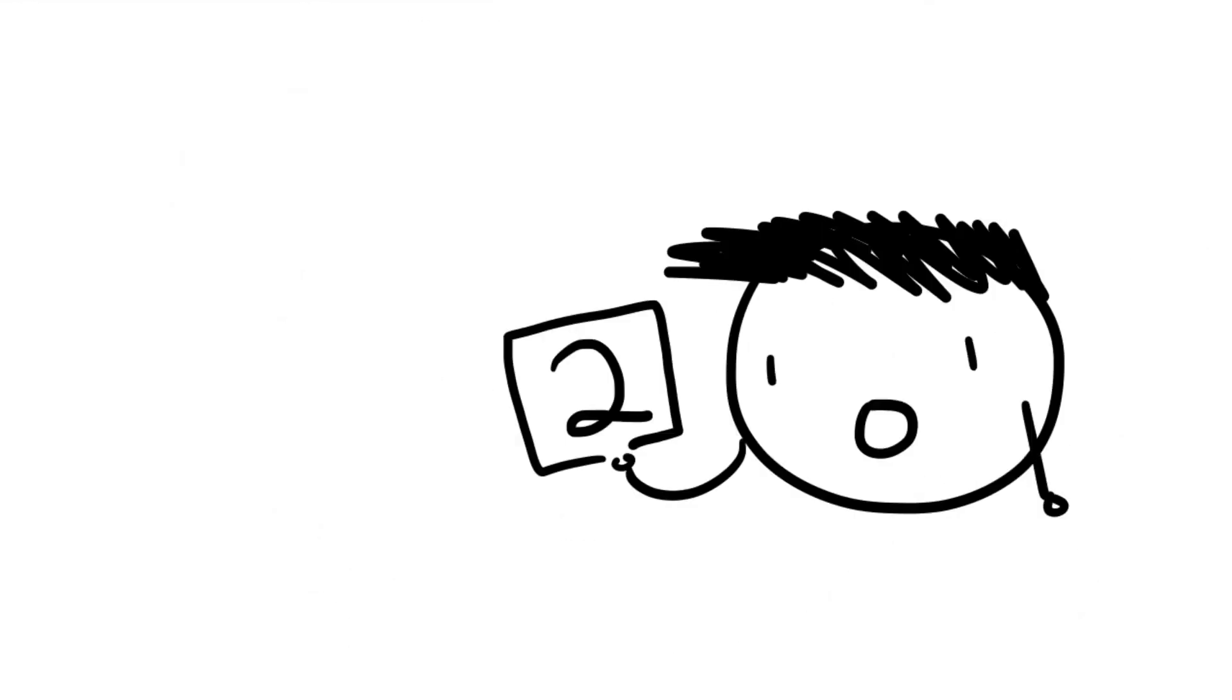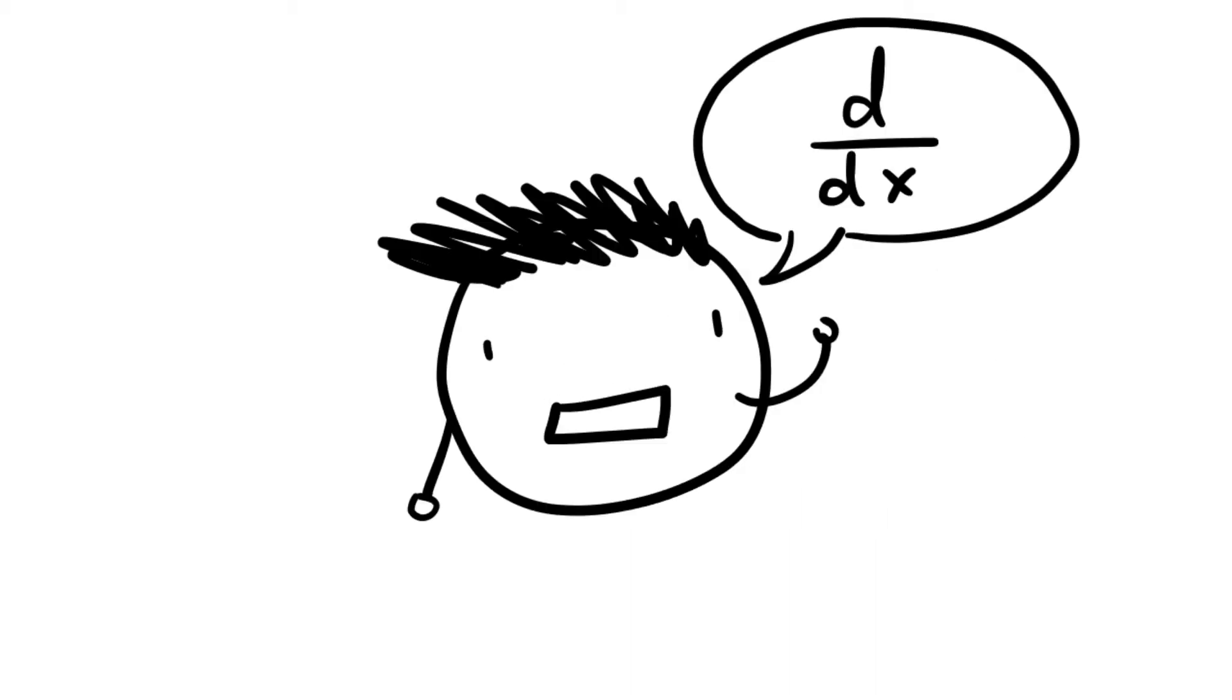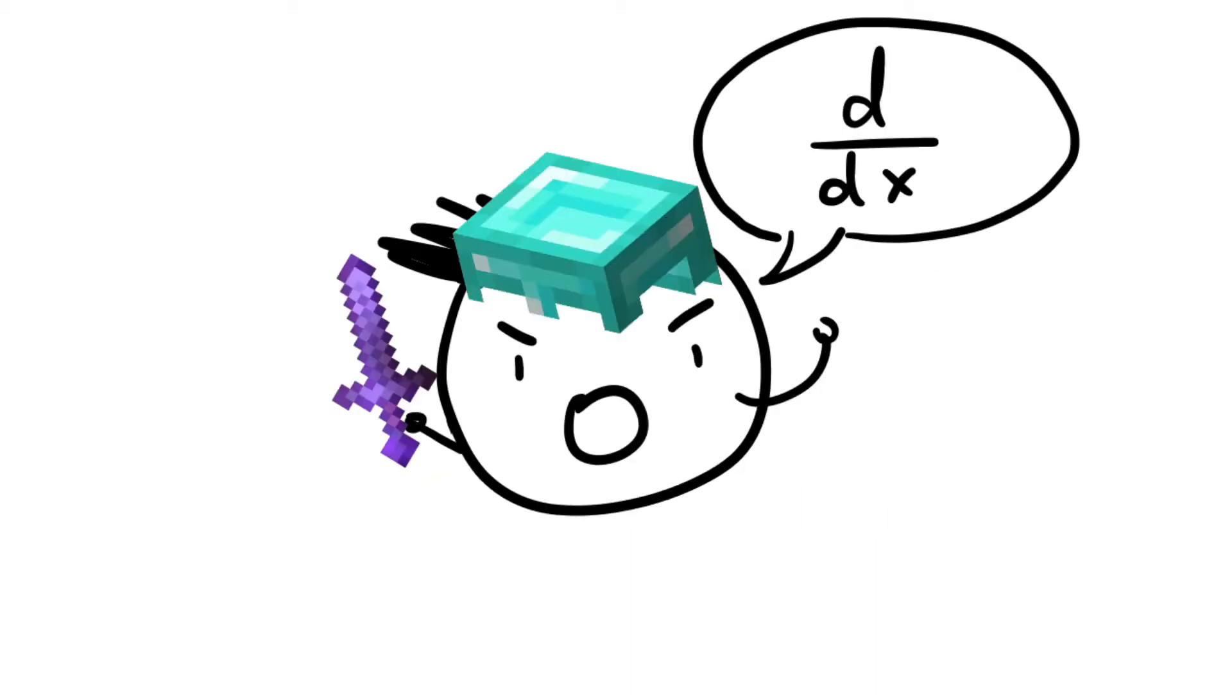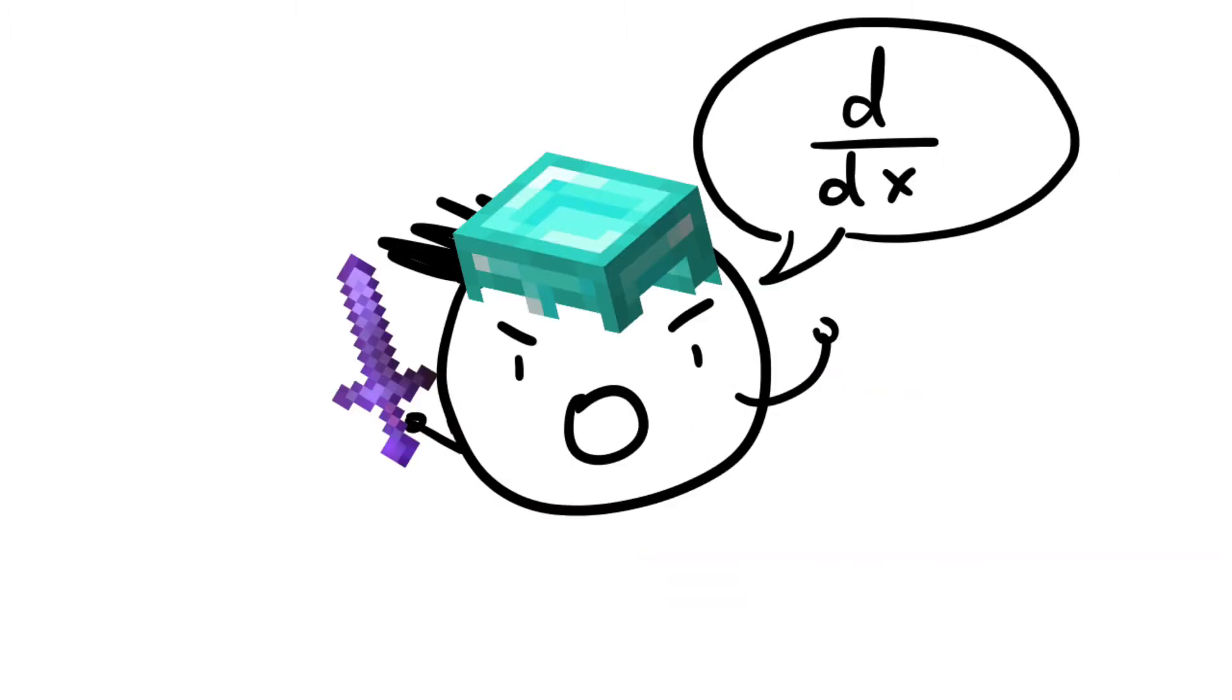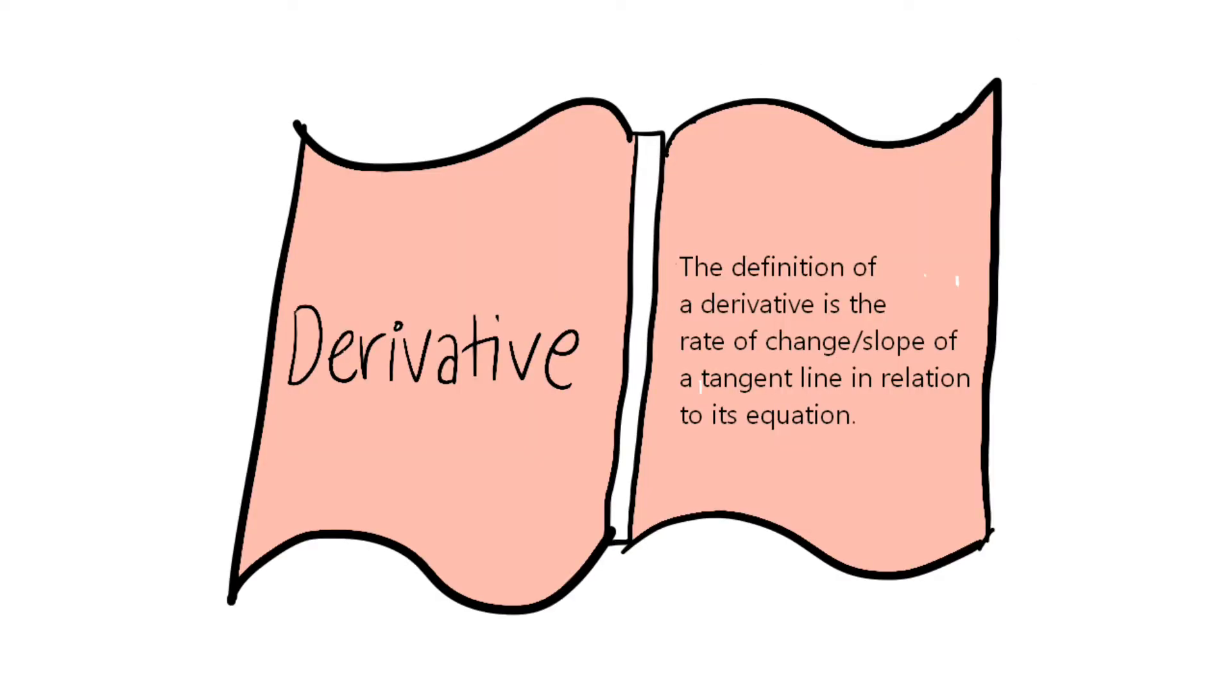Two major concepts in calculus are derivatives and integrals. Learning derivatives is like crafting a sharpness 5 netherite sword that will be used to defeat the ender dragon, which in this case are integrals. So what are derivatives? Derivatives is the rate of change slash slope of a tangent line in relation to its equation. What does this mean?